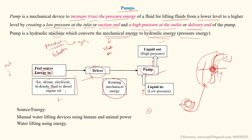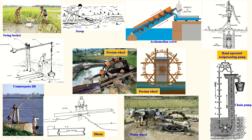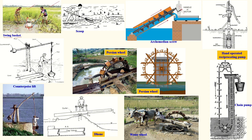The sources of energy include manual power — human or animal — and lifting energy such as electricity, steam, hydraulic, or diesel energy. One manual method is the swing basket: suppose an agricultural field is at a higher level and the water source is at a lower level. Two laborers use a bucket in a swinging motion to transfer the water upward.